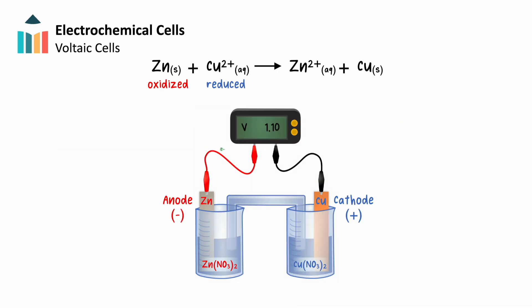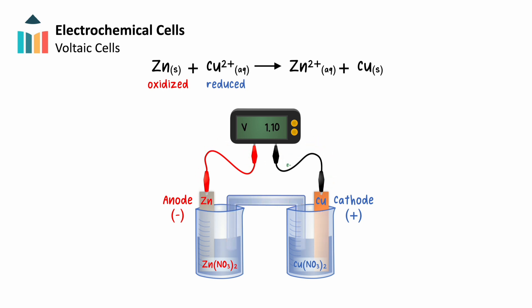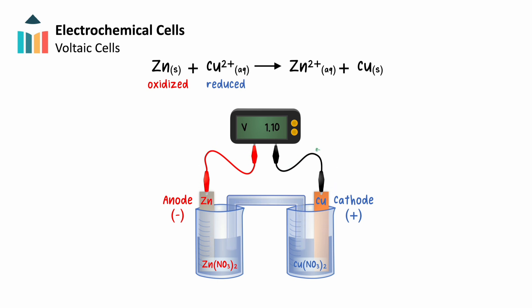The overall flow of negative charge in this example is in the clockwise direction. This negative charge current consists of electrons in the external circuit and negative ions in the two half-cells and salt bridge. The flow of positive charge is in the anticlockwise direction, consisting of conventional current in the external circuit and positive ions in the two half-cells and salt bridge.